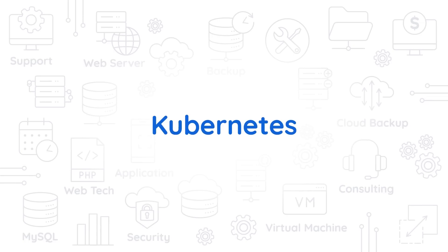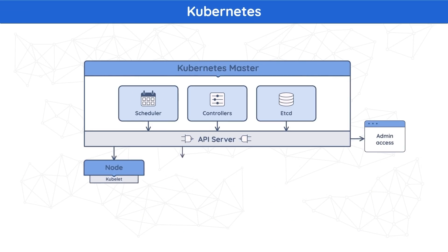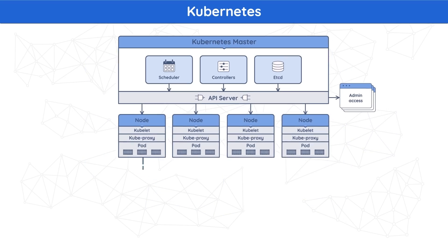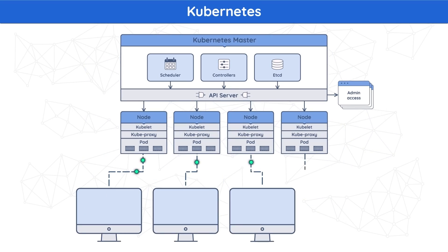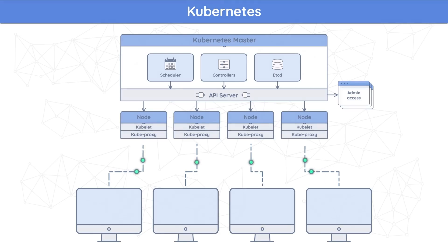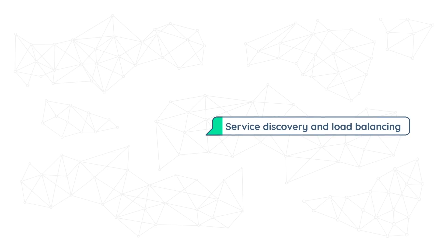Now let's talk about Kubernetes. Kubernetes is a portable, extensible, open-source platform for managing containerized workloads and services. It is used to facilitate both declarative configuration and automation, providing users with a framework to run distributed systems resiliently. It can take care of scaling and failover for applications, provision deployment patterns, and more. Kubernetes possesses an elaborate set of features — let's look at the most important ones.